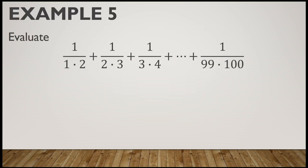Evaluate: 1/(1×2) + 1/(2×3) + 1/(3×4) + ... + 1/(99×100). If you were to simplify this manually, it would involve 100 fractions, which is extremely difficult without a calculator. So instead, let's write it in sigma notation to see if it becomes a telescoping sum.